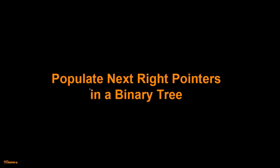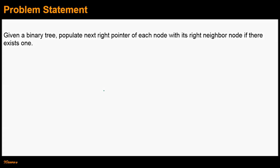Hello friends. Today let's look at the algorithm for populating the next right pointers in a binary tree. The problem statement is: we are given a binary tree and we have to populate the next right pointer of each node with its right neighbor node, if there exists one.